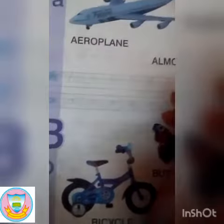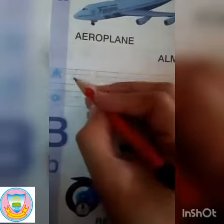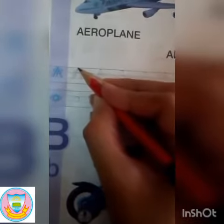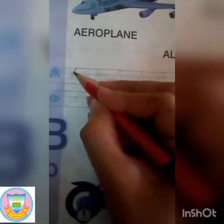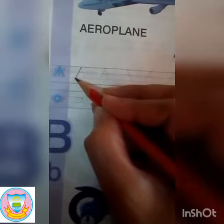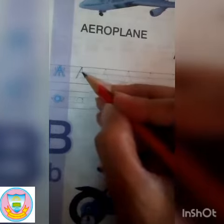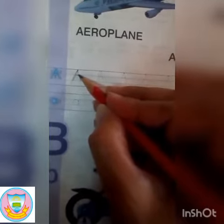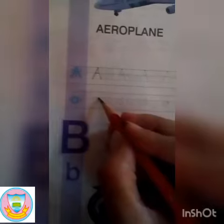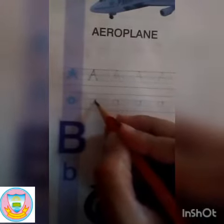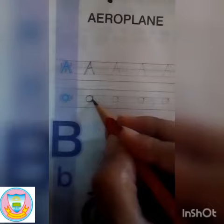Now how to write the capital letter A? First line like this, then second line like this, then third line — A. And for small a, you have to write it like this — A.